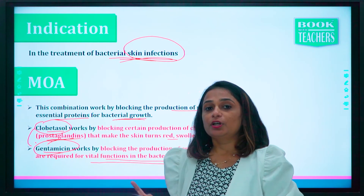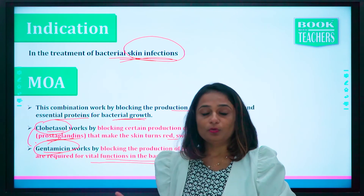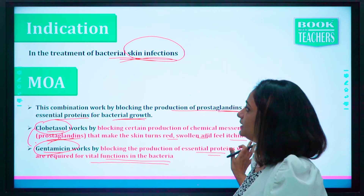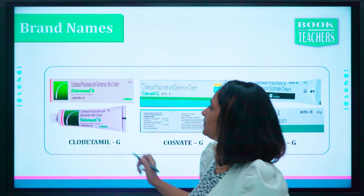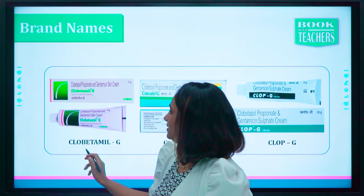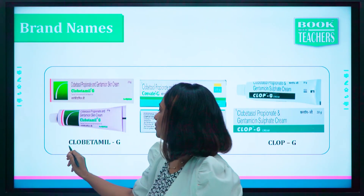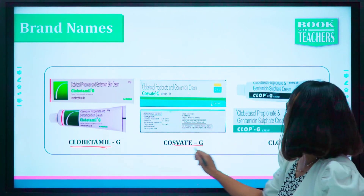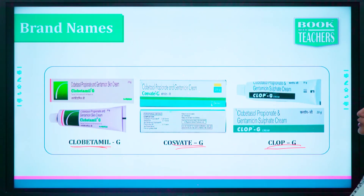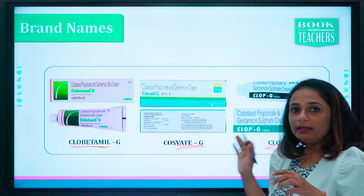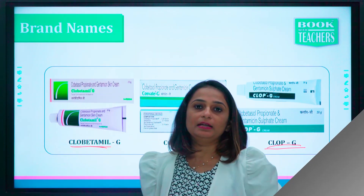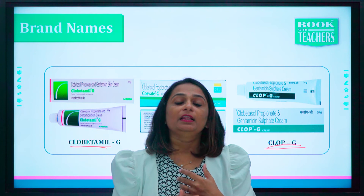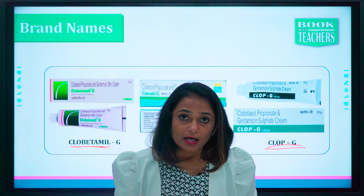The brand names included in the presentation have the same dosage form, which is the cream. The brands are Clobetamyl G, Cosvet G, and Clob G. All three preparations are available in topical form, that is, as a cream.